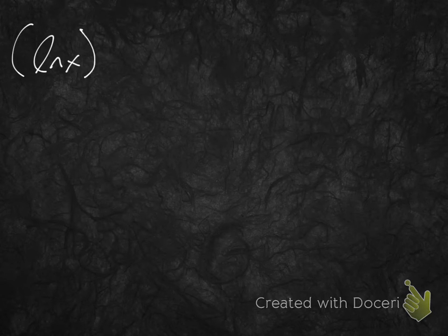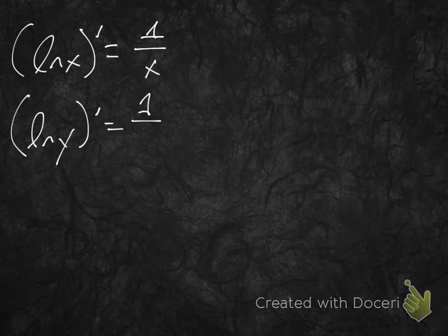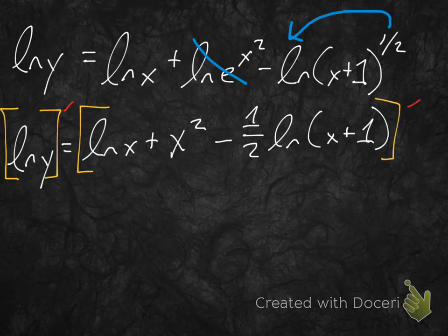ln x, that's easy. We already know that ln x prime, this is just one of our rules, is 1 over x. So, by that token, should ln y prime not just be 1 over y? Well, yeah, but we're not totally done yet. Because we're not evaluating with respect to x, we're going to have to use the chain rule and pop in another y prime. So, it's 1 over y times y prime. So, this is the derivative of ln y. So, we're going to have to use that from here on out.